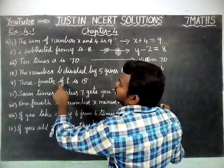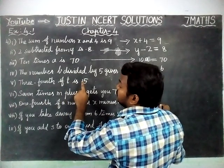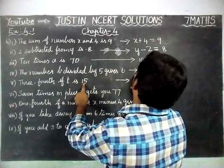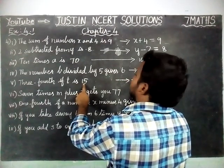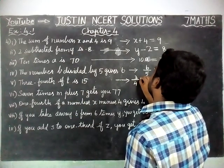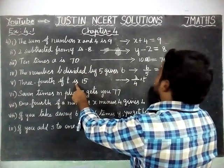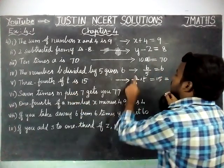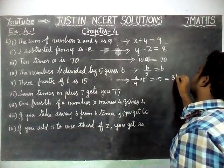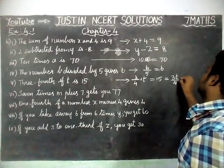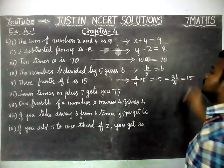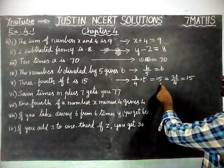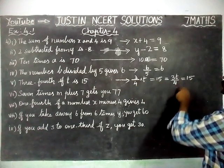Next, 3 fourth of T is 15. We can write '3 fourth of T' as 3 by 4 into T equal to 15. This can also be written as 3T divided by 4 is equal to 15. So 3T ÷ 4 = 15.